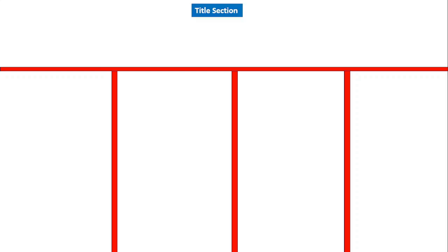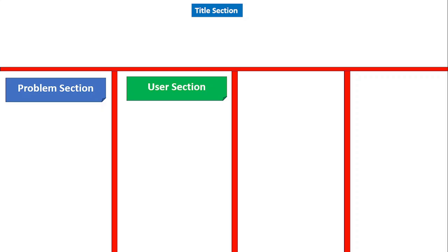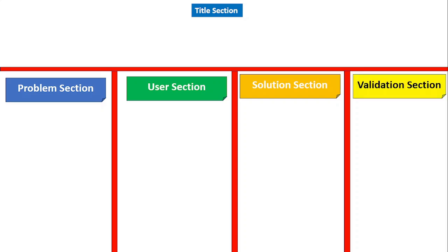For pitch development using sticky notes, split the whiteboard into five sections: the top center is the title section; the left side has the problem section; the center-left has the user section; the center-right has the solution section; and the far right has the validation section. This layout helps with exploring pitch development.